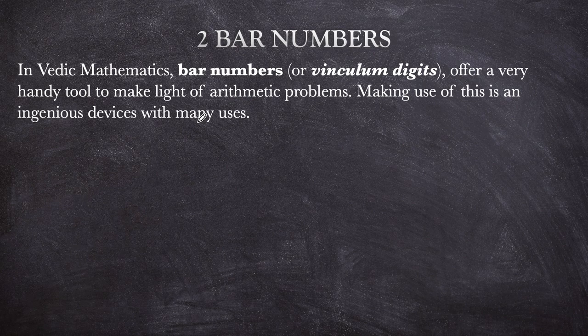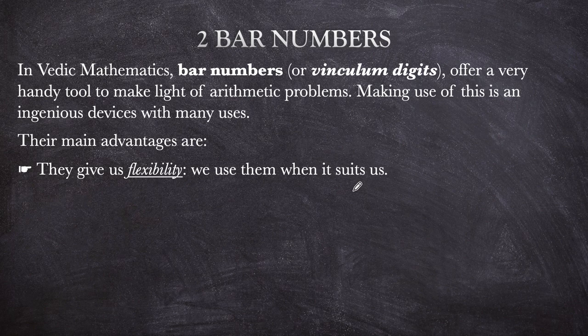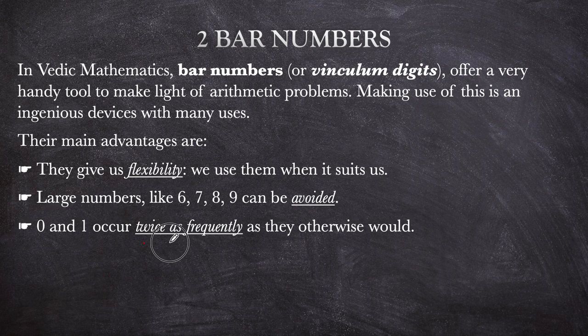The main advantage of using bar numbers is that they give us flexibility — we use them when it suits us. The large numbers like 6, 7, 8, 9 can be avoided because we will be converting them into numbers like 0, 1, 2, 3, 4. So 0 and 1 occur twice as frequently as they otherwise would. Dealing with small numbers makes the arithmetic easier compared to having numbers like 6 up to 9.